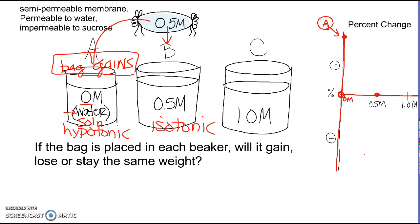How about if we put our 0.5 molar bag into a 1 molar solution? Now our bag should lose weight because this is now a hypertonic solution and our bag would lose weight. So I would probably get some number, let's just say, down here. And I could actually graph this and I would get something like this.